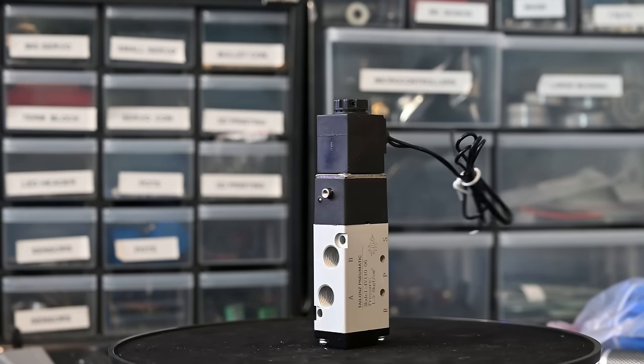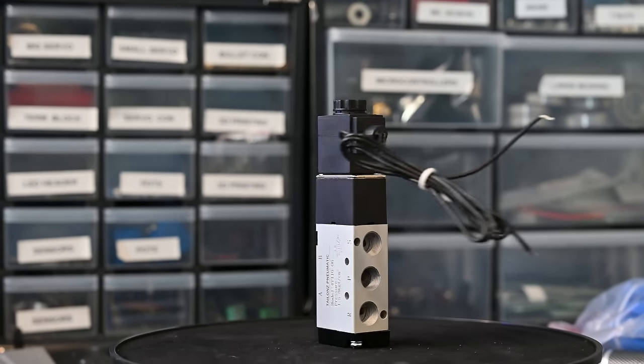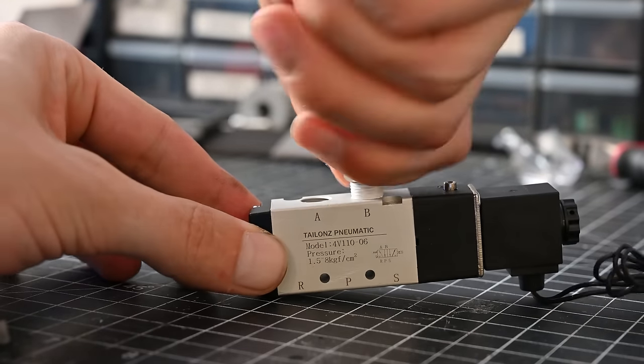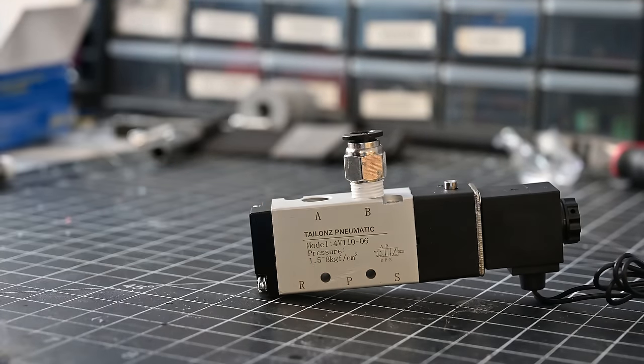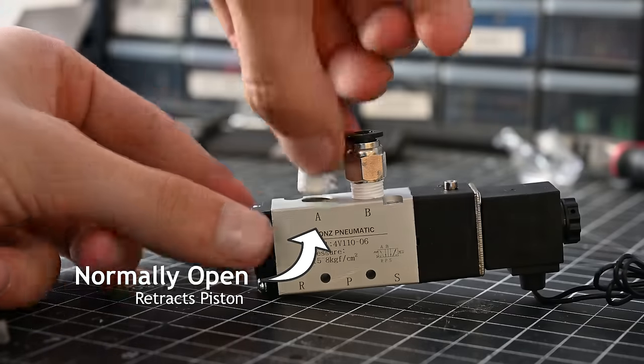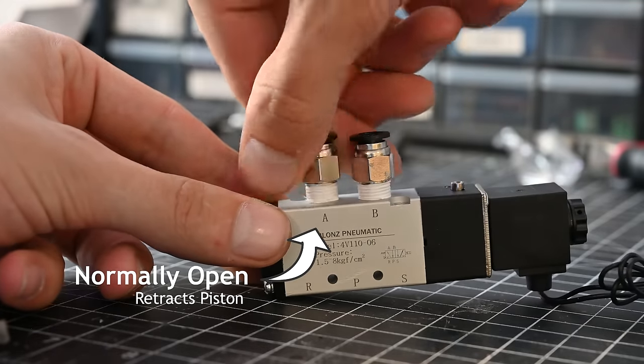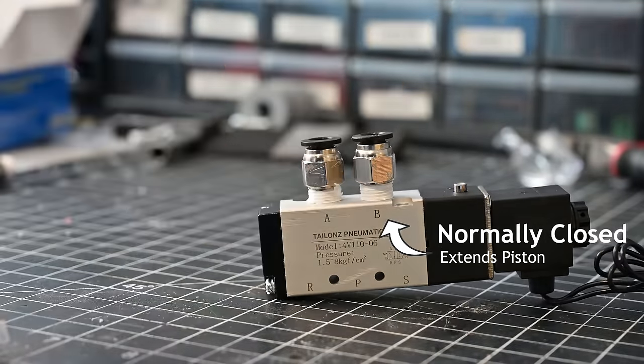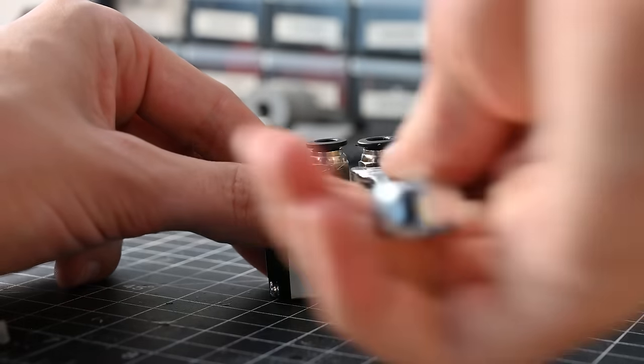To actually control which side of the piston gets pressurized, I'm going to use this. It's a solenoid valve that has two different output ports. Normally the air is output out of this port, but when I attach the two leads of the solenoid to a battery, the valve switches and the air comes out of the other port. This will make the piston extend and retract.